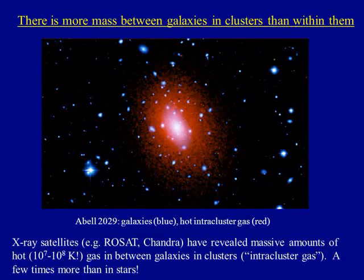One of the key features of clusters is the intracluster medium. The ICM consists of heated gas between the galaxies and has a peak temperature between 2 to 15 keV, which is dependent on the total mass of the cluster.